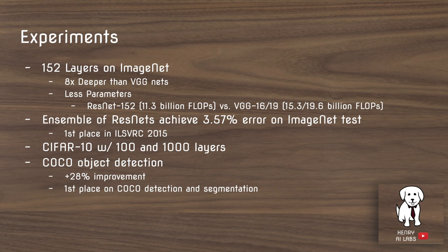They also test on CIFAR-10 with 100 and 1000 layers, and then use ResNet features on the COCO object detection benchmark. The way object detection networks work is you use VGG or ResNet to extract features from the image dataset, and then classify different bounding boxes based on a region proposal algorithm.